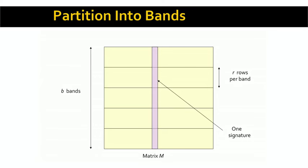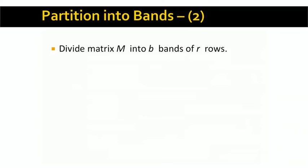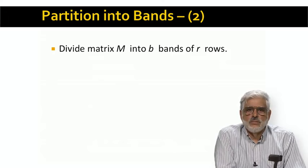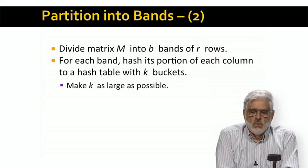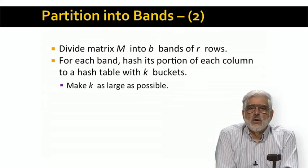We divide the rows into B bands. As a result, there are R rows per band, where B times R equals the total length of the signatures — the number of minhash functions used. We create one hash function per band. This hash function hashes the values that a given column has in that band only. Ideally, we would make one bucket for each possible vector of R values that a column could have in that band — making the hash function essentially the identity function.